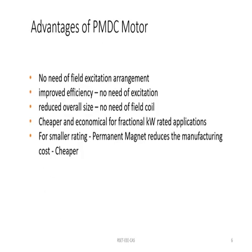Advantages of permanent magnet DC motor: since we are using permanent magnets as the field, there is no need for any field winding excitation arrangement, which improves efficiency and reduces the overall size of the motor. This is also a cheaper and more economical option for fractional kilowatt rated applications, as the permanent magnet reduces manufacturing cost, making the motor a cheaper version overall.